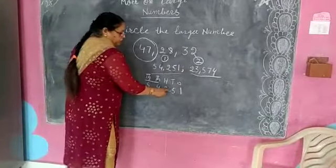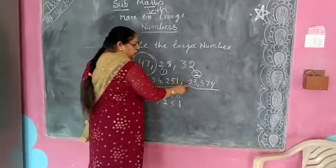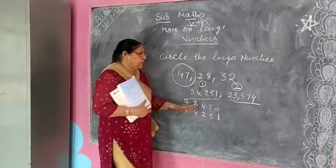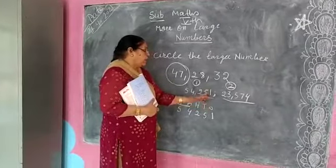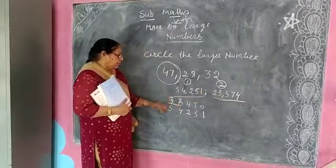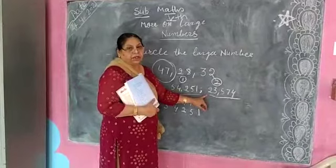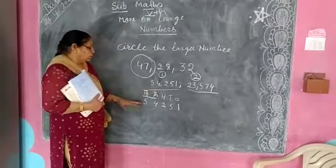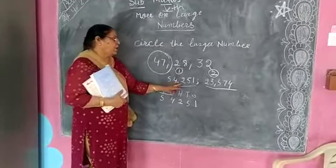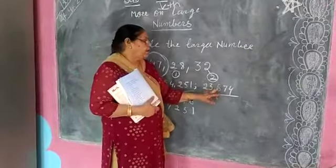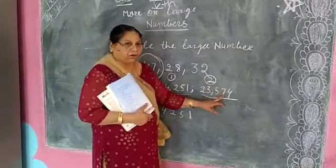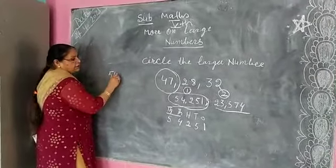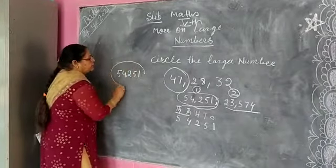So we have 54,251 and the second number is 23,574. We have 2 numbers here. Which number is larger? Obviously, looking at the ones column — 1 or 4 — the ones column doesn't decide. But we have 54,000 and 23,000, so 54,251 is larger than 23,574. This is the answer to the first question.